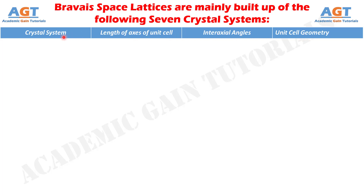Note that the letters A, B, and C have been used to denote the dimensions of the unit cells, whereas the letters alpha, beta, and gamma denote the corresponding angles in the unit cells.